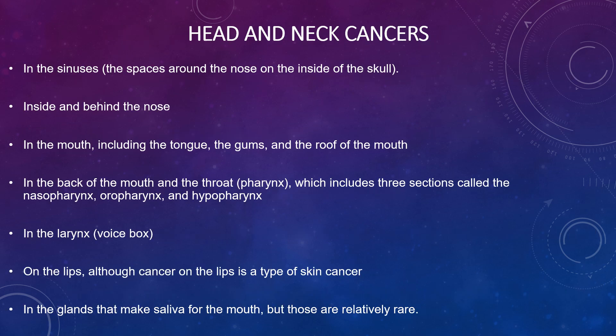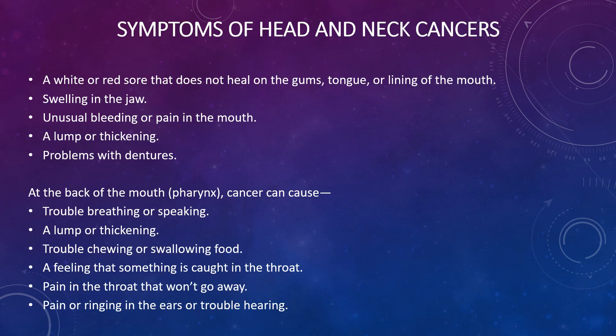Looking at head and neck cancer: these occur in the sinuses — the space around the nose and inside the skull — behind the nose, in the mouth, the gums, the roof of the mouth, the back of the mouth, in the throat (the pharynx — including nasopharynx, oropharynx, and hypopharynx), and in the larynx (the voice box). Cancer can also occur on the lips, which is a type of skin cancer, and in the salivary glands.